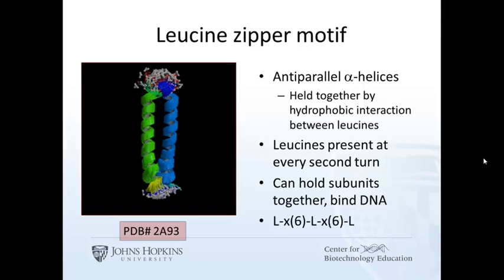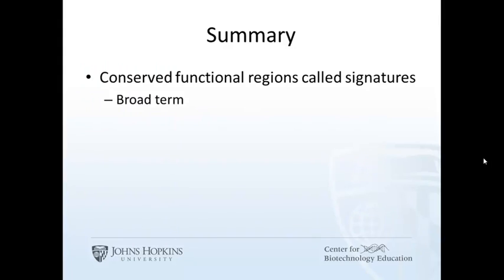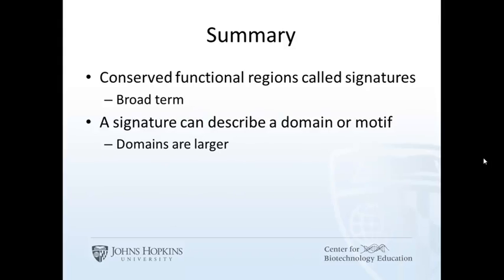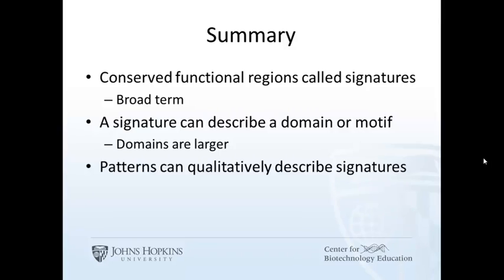So if leucine is every seventh amino acid, the pattern is easy to describe: L, followed by any six amino acids, followed by L, followed by any six amino acids, followed by L. Signature is the term for a conserved region of a protein, usually associated with some purpose. A signature can describe a domain or motif — generally, motifs are smaller and domains bigger. Regular expressions can qualitatively describe a pattern. Keep that in mind as you search profile and pattern databases.